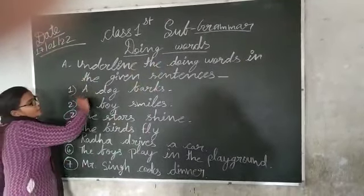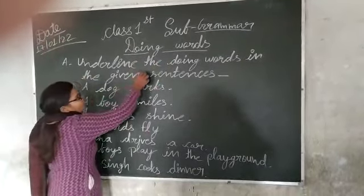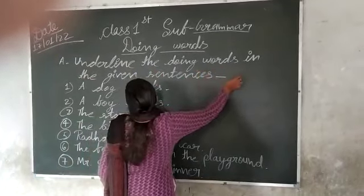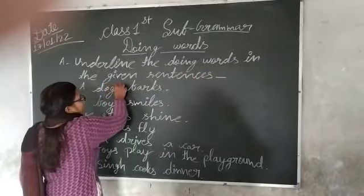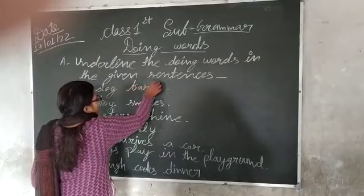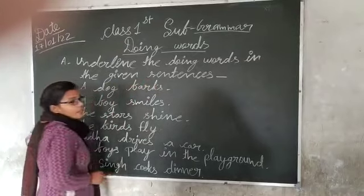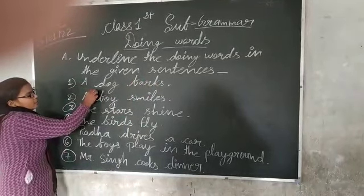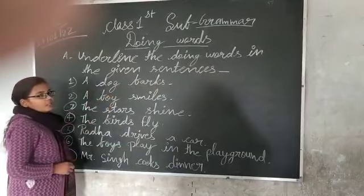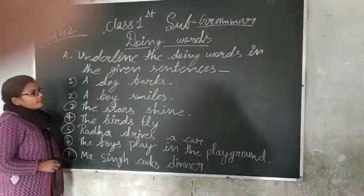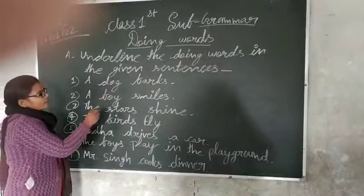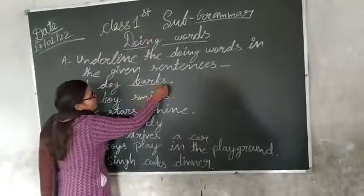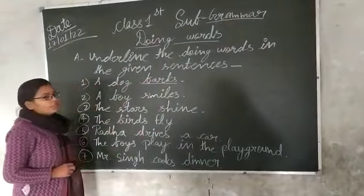Underline the doing words in the given sentences. A dog, box. In this line, box is a doing word.